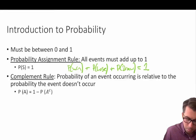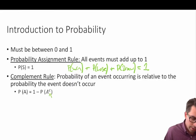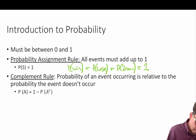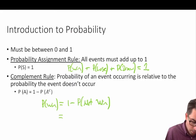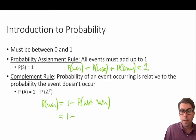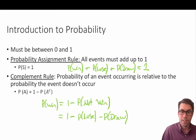The complement rule says the probability of an event occurring is relative to the probability that the event does not occur. The probability of A is equal to 1 minus the probability of A complement — that's A with a superscript C, meaning the opposite of event A. In chess, the probability that we win is 1 minus the probability that we don't win, which includes the probability of drawing, so: 1 minus the probability of losing minus the probability of drawing.